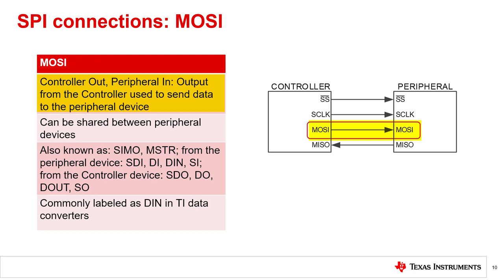MOSI is controller out, peripheral in. This line is used to send data from the controller to the peripheral device. The peripheral reads the MOSI line based on synchronization from SCLK. On the peripheral device, this line may be known as SIMO, SDI, DI, DIN, or SI. On the controller side, it may be labeled SDO, DO, or DOUT. In precision data converters, configuration data are sent on this line. If the peripheral is not selected via peripheral select, this line is deactivated. In many TI precision data converters, this digital input is commonly labeled as DIN.